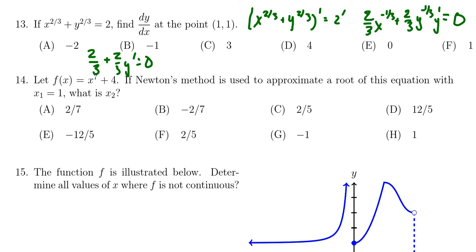Subtract two-thirds from both sides, so we get two-thirds y prime equals negative two-thirds. And so we then divide both sides by two-thirds and get that y prime is equal to negative one, which then tells us the correct answer was choice B.